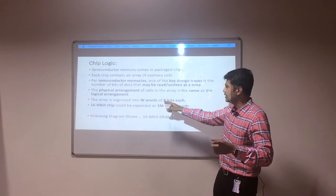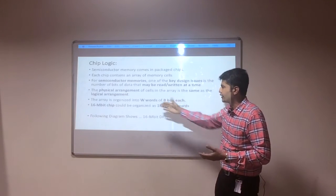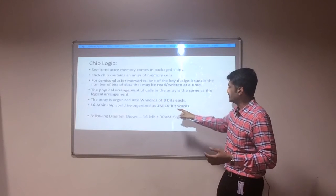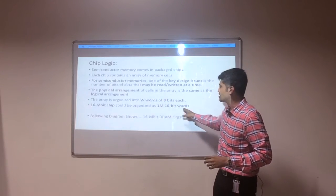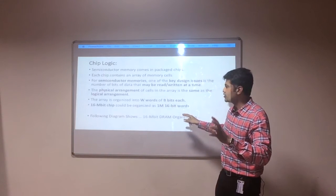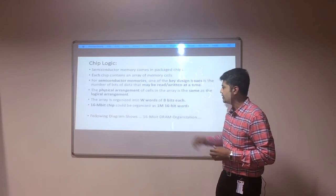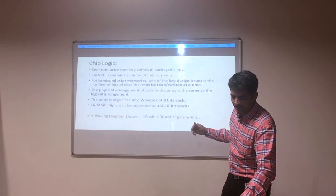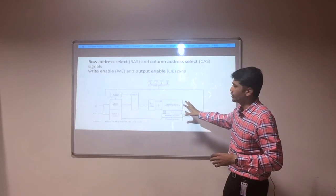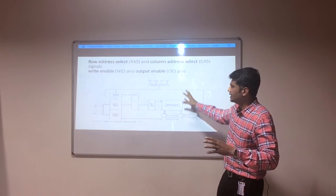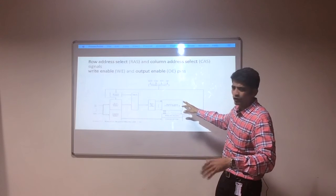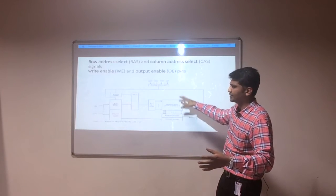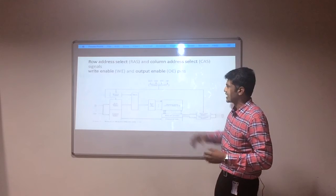The array is organized into W words of B bits. For example, consider a 16 MB chip. A 16 MB chip will be organized as 1M × 16 bits. The following diagram shows the 16 MB DRAM organization. There are four control lines: row address select, column address select, write enable, and output enable. A row address buffer, column address buffer, row decoder, and column decoder are all present.